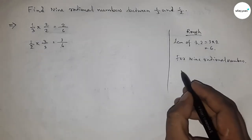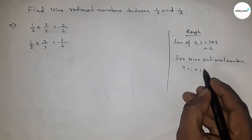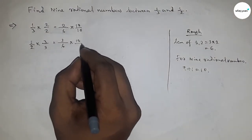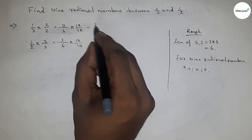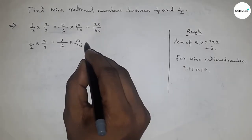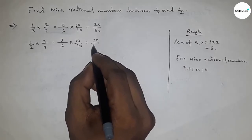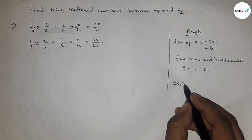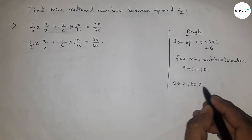by nine plus one, so ten. So we should be multiplying here 10/10 and 10/10. So this is 20/60 and this is 30/60. Between 20 and 30 we can get